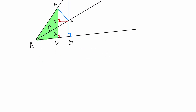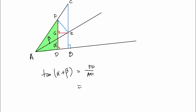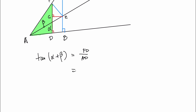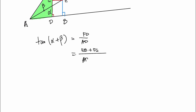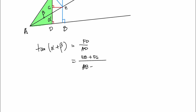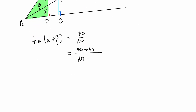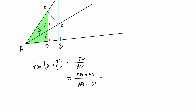First of all, let's say that the tangent of alpha plus beta equals FD over AD. We can simplify further: FD equals EB, because these sides are parallel and perpendicular to each other — it forms a rectangle. So that gives us EB plus FG over AB minus GE, also from that rectangle. What we have here, we want to manipulate into the tangent values of alpha and beta.